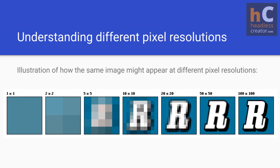The word 'pixel' comes from 'picture element' — 'pix' from picture and the 'el' from element. Here's an illustrated version of how the same image might appear at different pixel resolutions. A pixel is so tiny you can't see it with the naked eye, but when you put a bunch together they make a complete image. In this comparison, a 5×5 image is unrecognizable, it gets clearer at 20×20, more clear at 50×50, and at 100×100 PPI with higher resolution, we see the image clearly. Each example is still a 1:1 aspect ratio — they're all perfect squares.